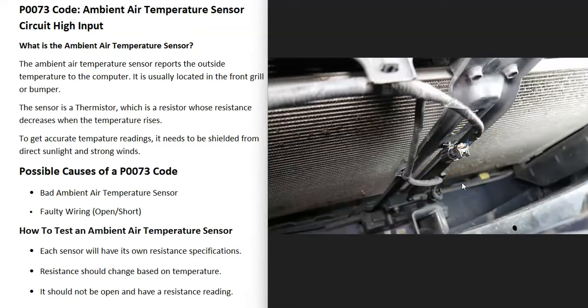So what are some possible causes of a P0073 code? It could be a bad ambient air temperature sensor. That sensor might have just failed and needs to be replaced.